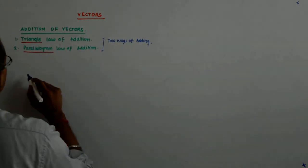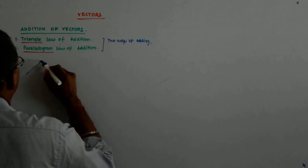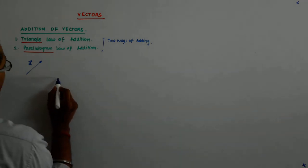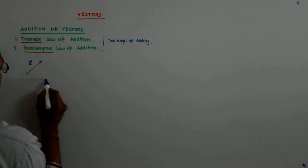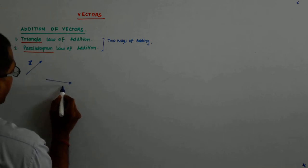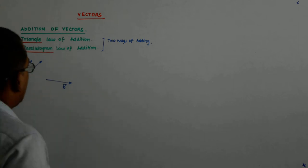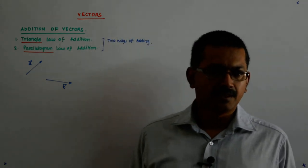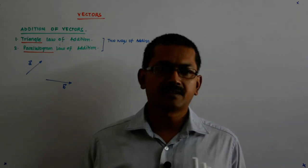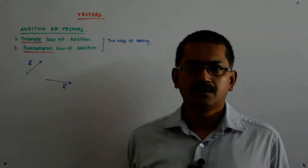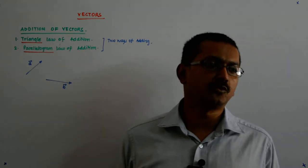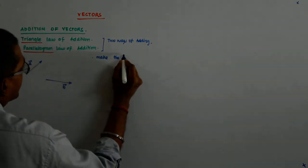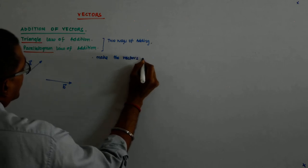Now, if there is a vector A and there is another vector B somewhere here, in the triangle law you had arranged them head to tail. The parallelogram law says you arrange them tail to tail — that means you make them co-initial. So the first thing is: make the vectors co-initial.